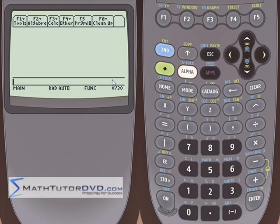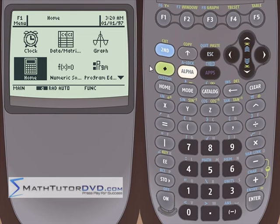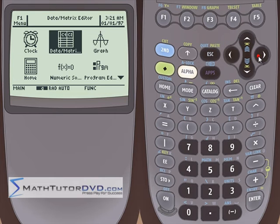Fortunately, the calculator gives you an alternative way to enter matrices. You can actually use this method to enter any matrix you want, even if it's a really small matrix. So what you need to do is go in the apps menu. We're going to press this apps button. Somewhere on that page should be an entry for data slash matrix editor.